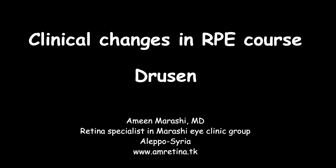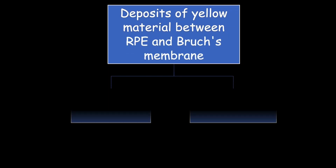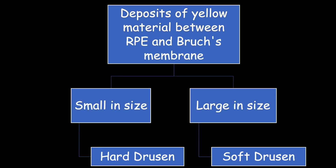This presentation is about drusen. Drusen are deposits of extracellular yellow material between retinal pigment epithelium (RPE) and Bruch's membrane, and mainly consist of lipids and fatty proteins.